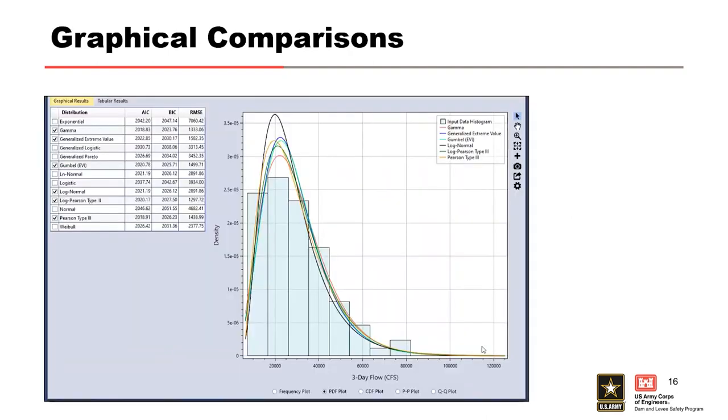Best Fit also offers five types of plots to visually assess the quality of the distribution fitting: frequency plot, PDF plot which is shown here, CDF plots, percentile-percentile plots, and quantile-quantile plots. Lots of things for you to look at. The distributions can be turned on or off so that you can focus on the distributions you want. You might only want to look at the three-parameter versus the two-parameter, or whichever ones, but you can turn them off to compare them.